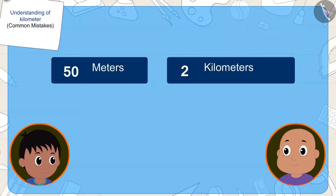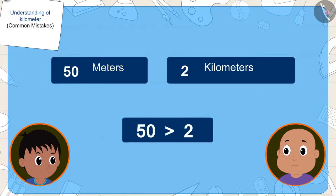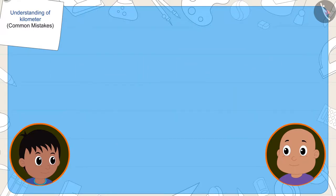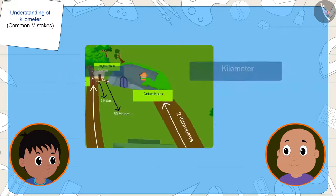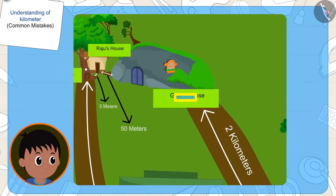His house is two kilometers away from Golu's house. And Raju's house is 50 meters from Golu's house. Even though two is less than 50, but because the meter is smaller than kilometer, Raju's house is closer to Golu's house.